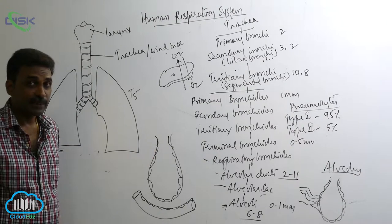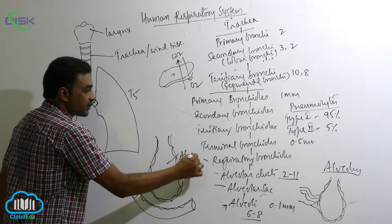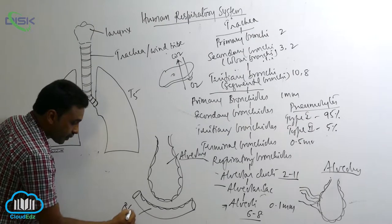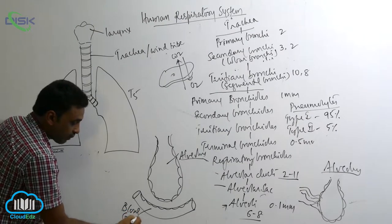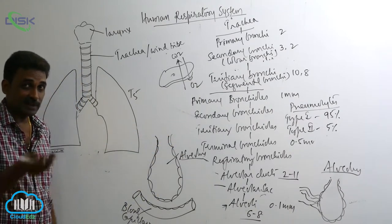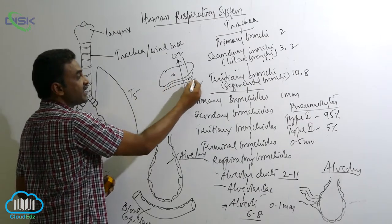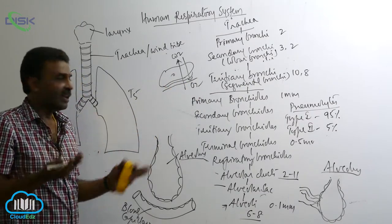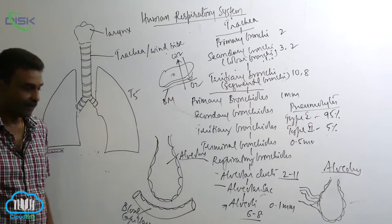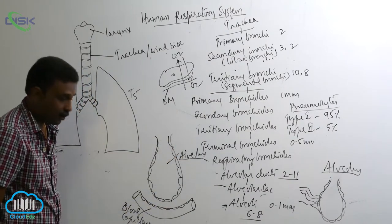Now lastly we are coming to the respiratory membrane. This is the alveolus and this is the blood capillary. These are pneumocytes we just discussed. The alveolus is made up of simple squamous epithelium, and at the base of any epithelial layer there is a basement membrane. So you can see this is the simple squamous epithelium of the alveolus, and this is the basement membrane.